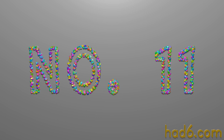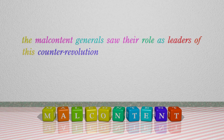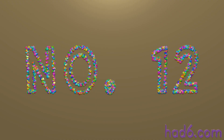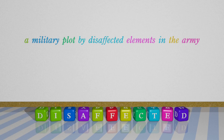Number 11: Malcontent, which means dissatisfied and complaining or rebellious. Number 12: Disaffected, which means dissatisfied, especially with people in authority or a system of control. For example: A military plot by disaffected elements in the army.